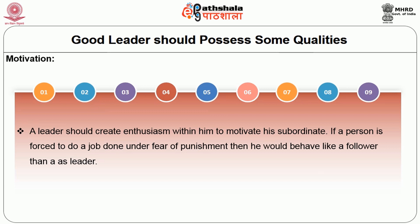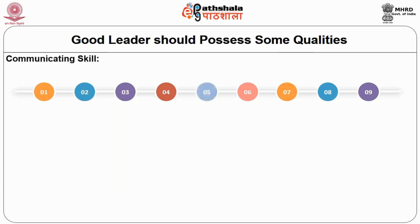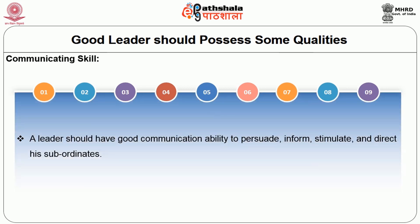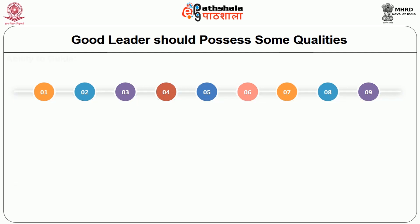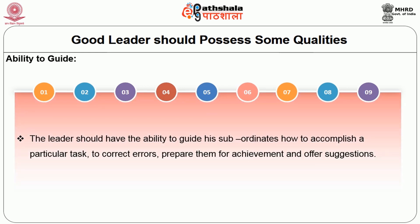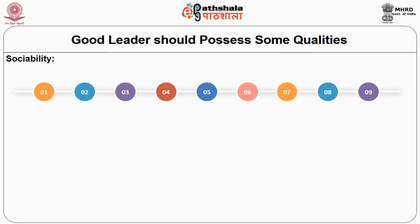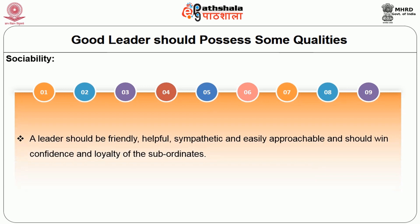If a person is forced to do a job under fear of punishment, then he would behave like a follower rather than a leader. The other important quality is communicating skill. A leader should have good communication ability to persuade, inform, stimulate and direct his subordinates. He should also have the ability to guide subordinates to accomplish a particular task, to correct errors, prepare them for achievement and offer suggestions. Sociability is also another quality — a leader should be friendly, helpful, sympathetic and easily approachable, and should win the confidence and loyalty of his subordinates.